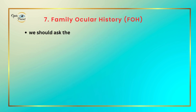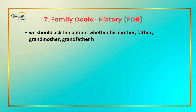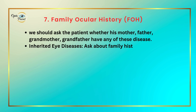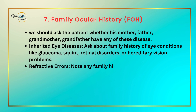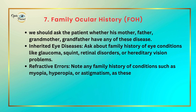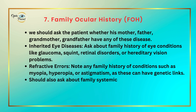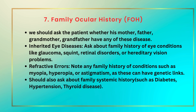Family ocular history. Ask the patient whether their mother, father, grandmother, or grandfather have any of these diseases. Ask about inherited eye conditions like glaucoma, squint, retinal disorders, or hereditary vision problems. Also record refractive errors such as myopia, hyperopia, or astigmatism, as these can have genetic links. Ask about family systemic history such as diabetes, hypertension, and thyroid diseases.